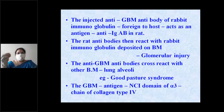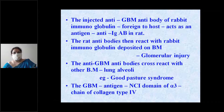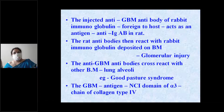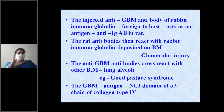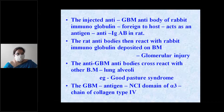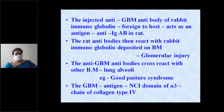Antibodies were produced in the rat against this anti-GBM immunoglobulin. The rat antibodies then reacted with the rabbit immunoglobulin on the basement membrane, causing diffuse linear deposition of immune complexes — antigen-antibody complexes — on the glomerular basement membrane, causing glomerular injury.